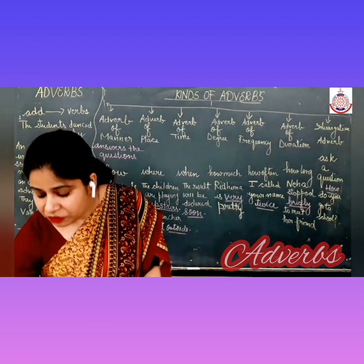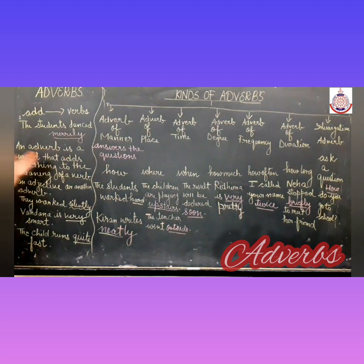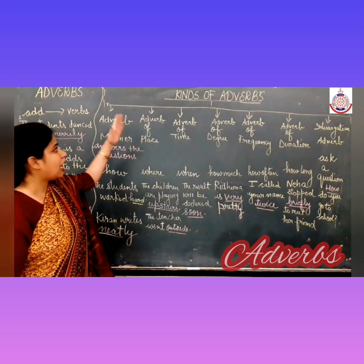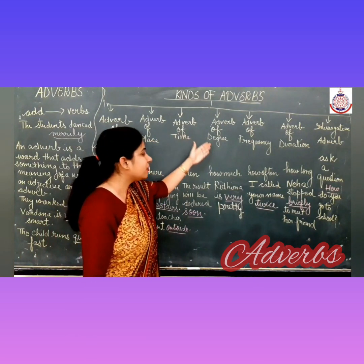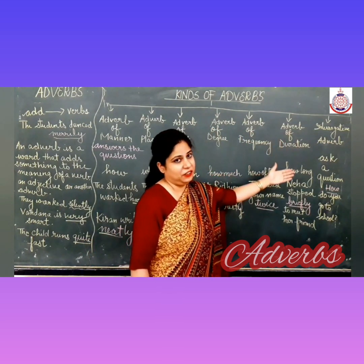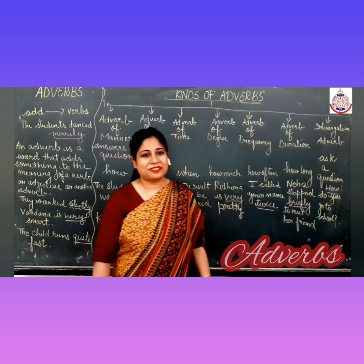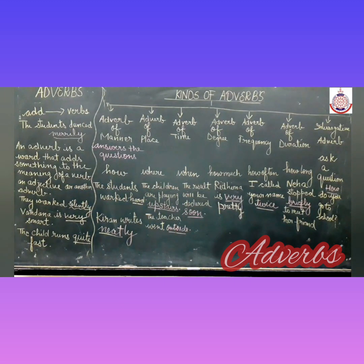So students, let us recapitulate what we have learnt today. We have learnt that an adverb is a word that adds something to the meaning of a verb, an adjective, or another adverb. And we have learnt seven kinds of adverbs: adverb of manner, adverb of place, adverb of time, adverb of degree, adverb of frequency, adverb of duration, and interrogative adverb. I hope you enjoyed this lecture. Thank you so much.